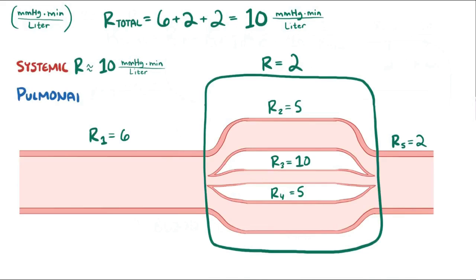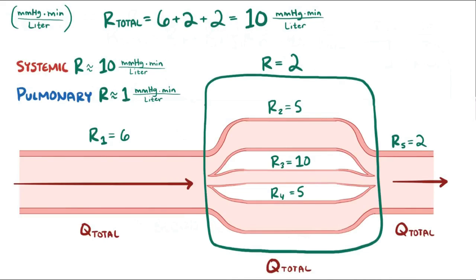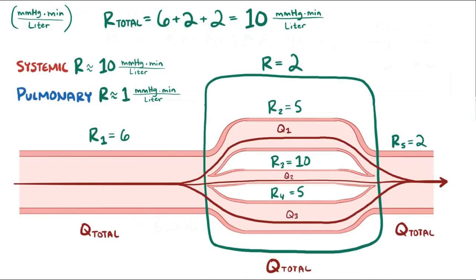By comparison, the pulmonary circulation has only about 1 tenth of that resistance, and it's closer to 1 millimeters of mercury times minutes over liters. It's also worth mentioning that, just like before, the blood flow through these bits in series is the same, along with the total flow through this whole parallel system. The flow through each of these individual parallel vessels, though, is not the same, since the blood has to split its flow through each of the vessels, although the sum of these three flows must equal the total flow.